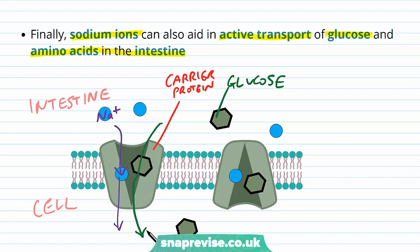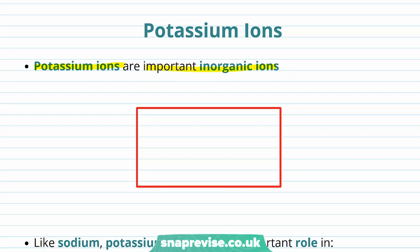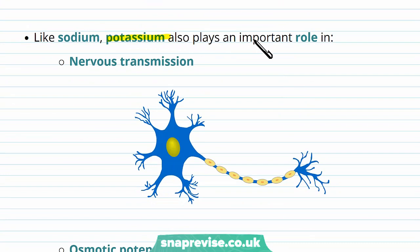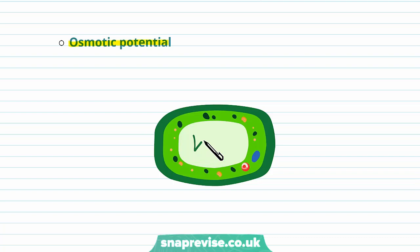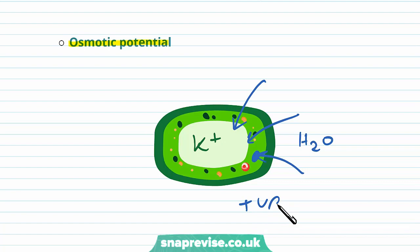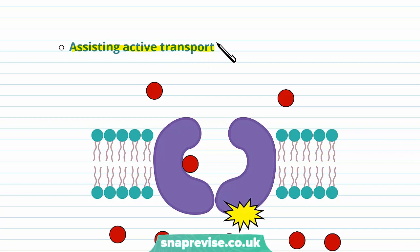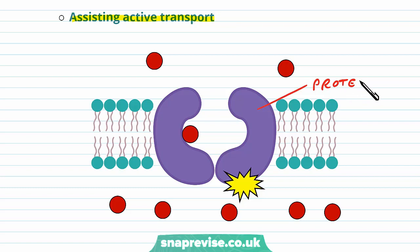Potassium ions are again a very important inorganic ion. The formula for potassium ions is K+, and therefore, because they're positively charged, they are cations. Potassium plays an important role in nervous transmission — the neurons have to send electrical impulses from one end to the other for communication, and it relies on both sodium and potassium, though they use these for different functions. Similarly to sodium, potassium is used for osmotic potential — potassium inside plant cells can draw water in, allowing cells to become turgid. It can also assist active transport, which uses ATP to move substances from low to high concentration.